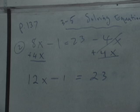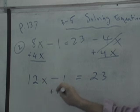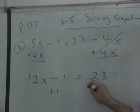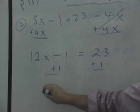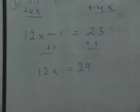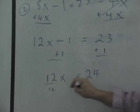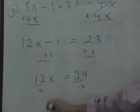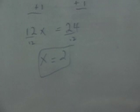So 12x minus 1 equals 23. What do we do on both sides? Taylor? You do the opposite, so you add. Add one. And guess what? What's negative 1 plus 1, Adam? Zero. That's right. 23 plus 1 equals 24. 12x equals 24. And what do we do now? Let's finish it off, Allie. You divide 12 on both sides. And x equals 2. There it is. Done.